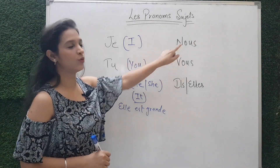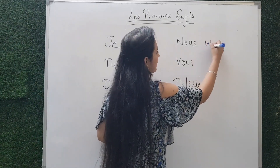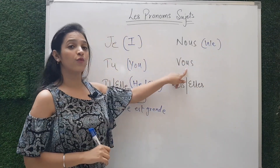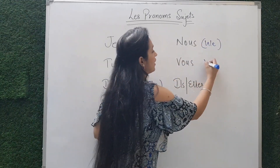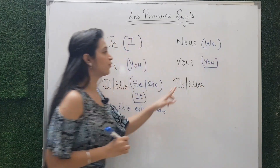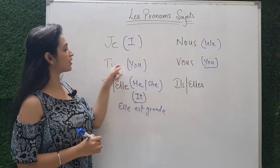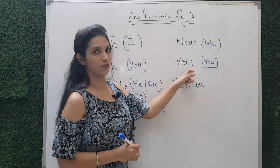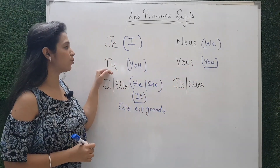Next, nous means 'we'. Then vous means 'you'. So we have tu and vous — both mean 'you'.